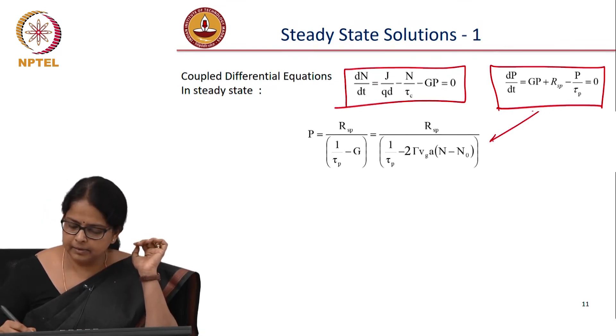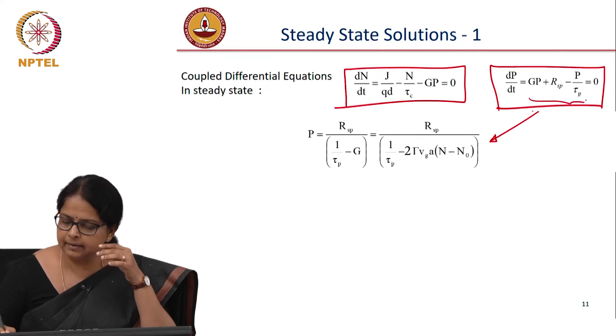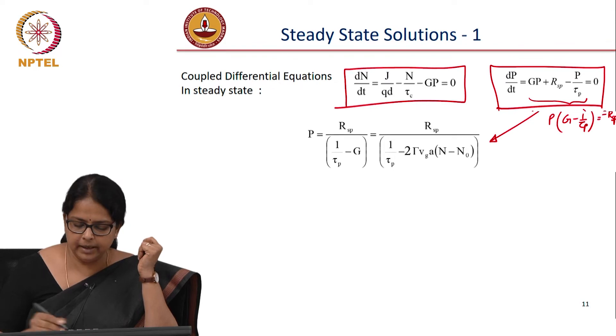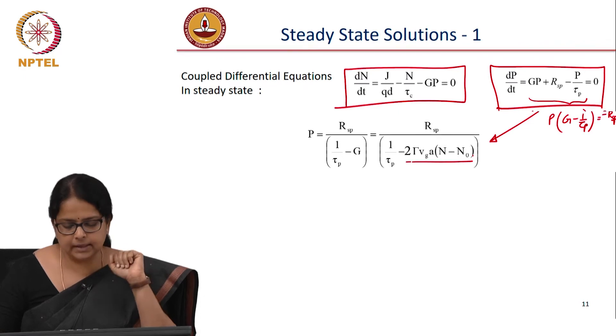I can use this to immediately find out what is my photon number. You see this has only P, so I can take P out of this. So P into G minus 1 by tau P is equal to minus RSP. So P is equal to RSP divided by 1 by tau P minus G and I have substituted all my definition of G.